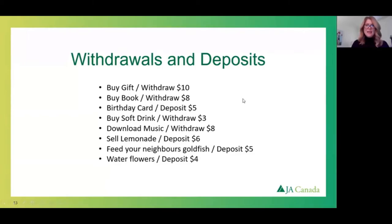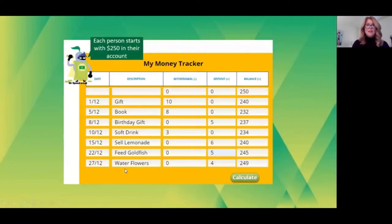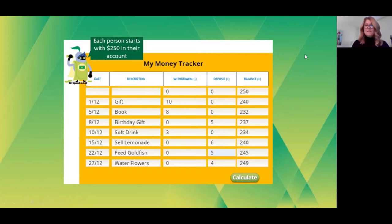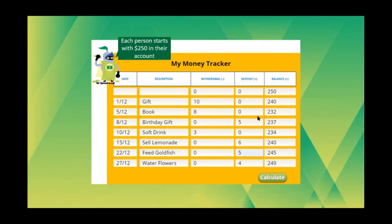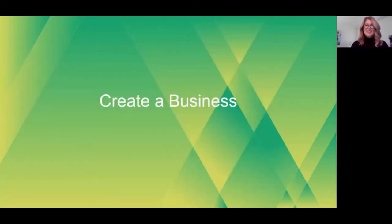All right, so you had a very busy day — you were buying gifts, you were getting gifts, you were buying books, soft drinks, downloading music, but you were selling lemonade and feeding your neighbor's goldfish and watering flowers. Let's see how you did. Here's the My Money Tracker. As we can see, we've indicated the description, whether it was a withdrawal or a deposit, and the balance. Did everybody come to the same balance? I'm going to pause it here and let you have a chance to review your responses. So now we've learned how to track money in our savings account.